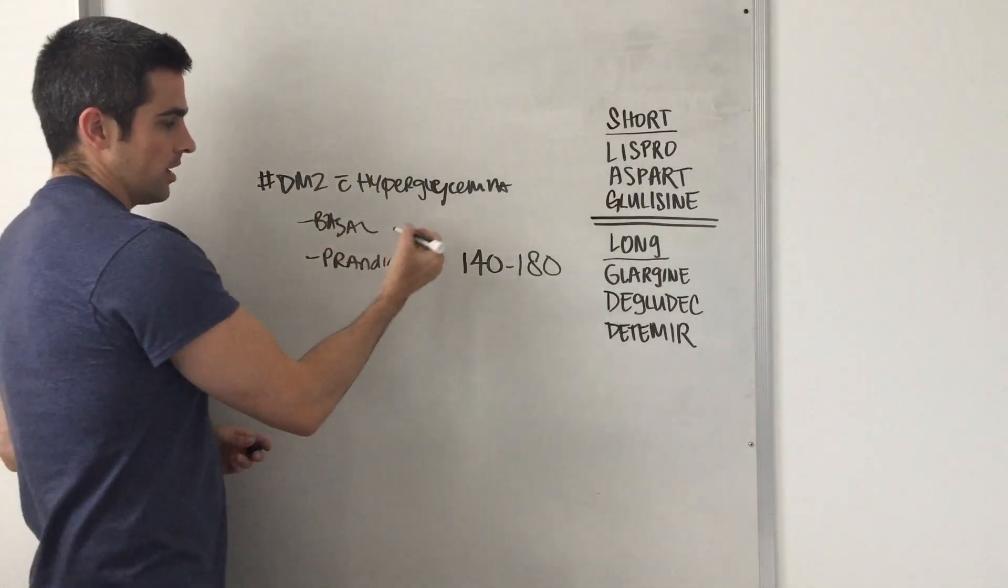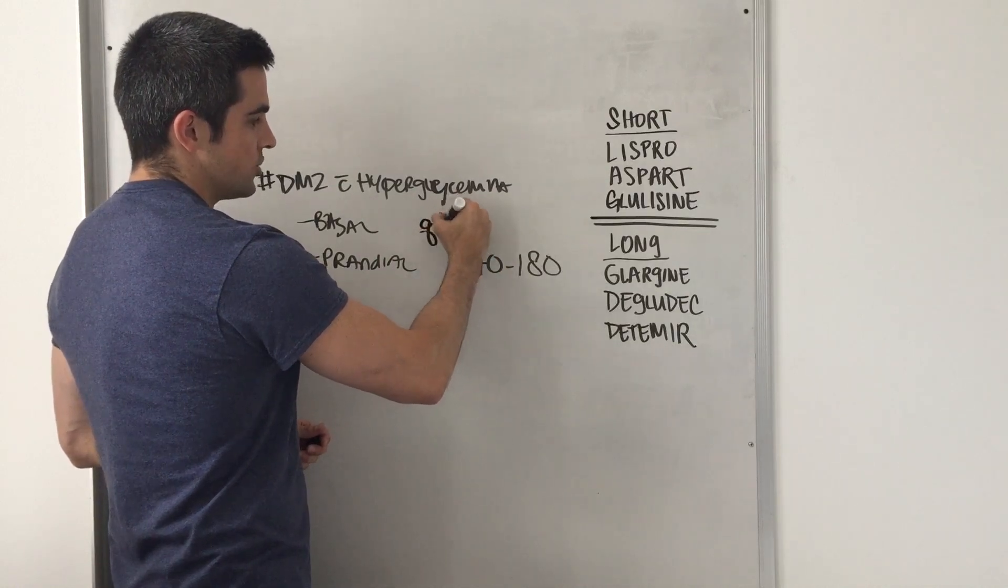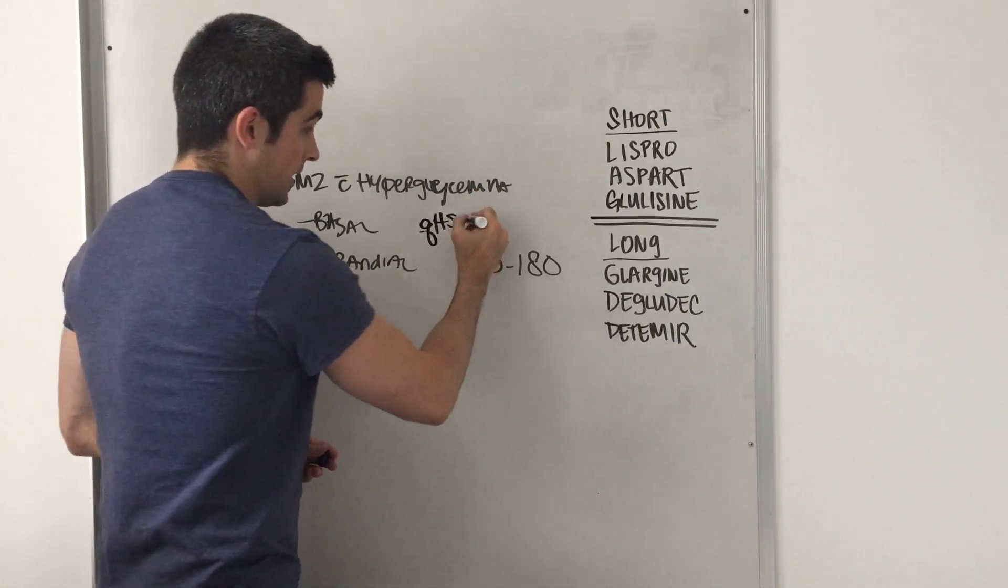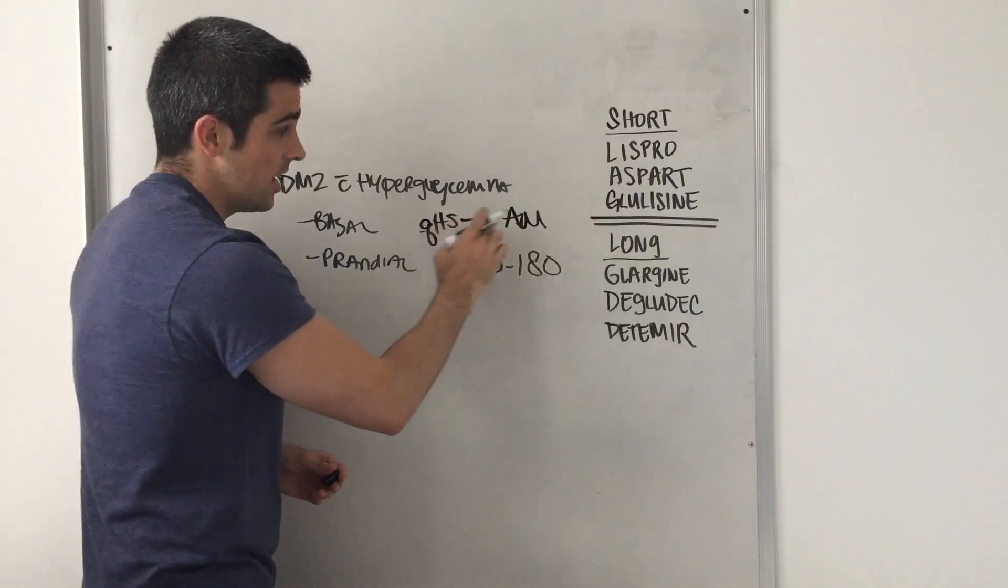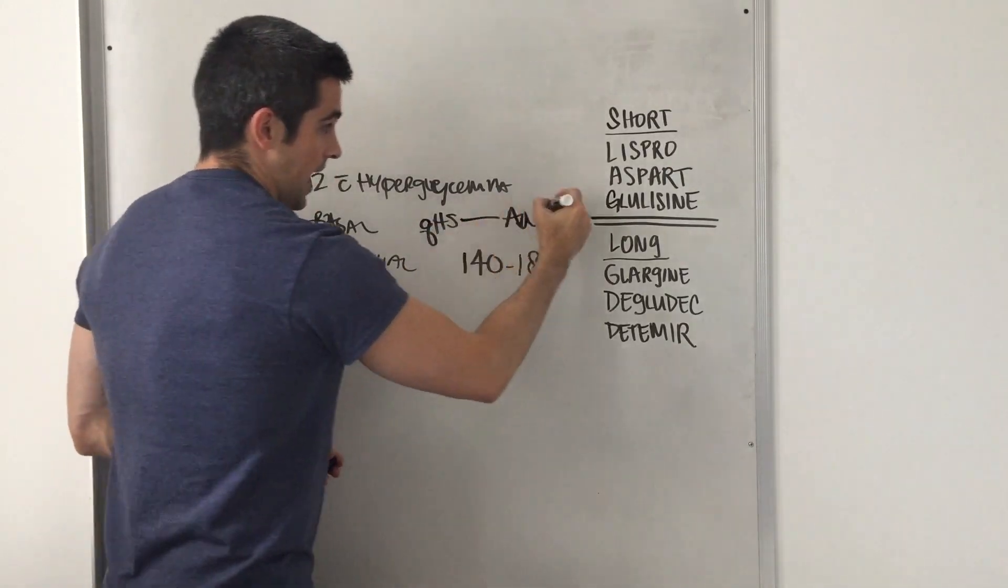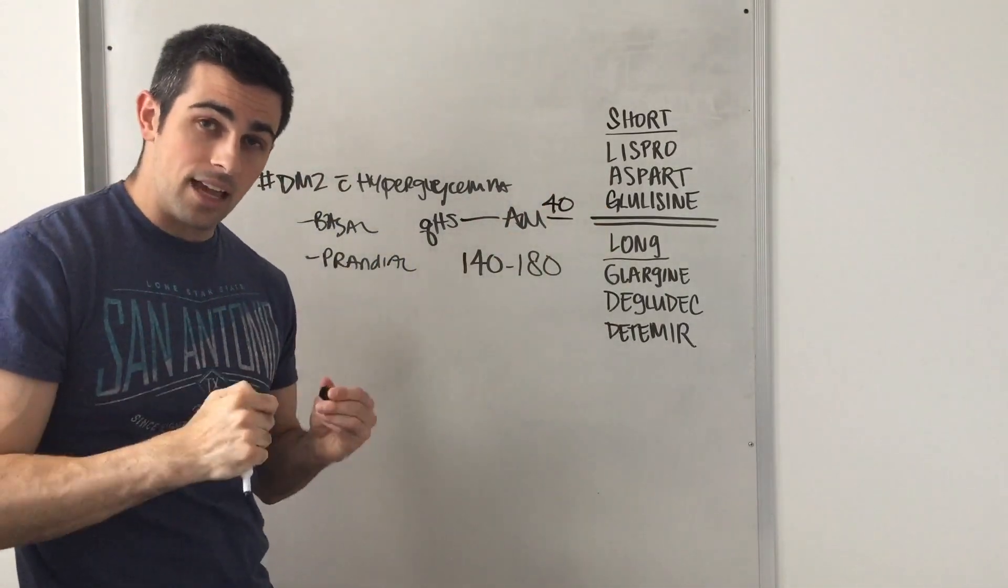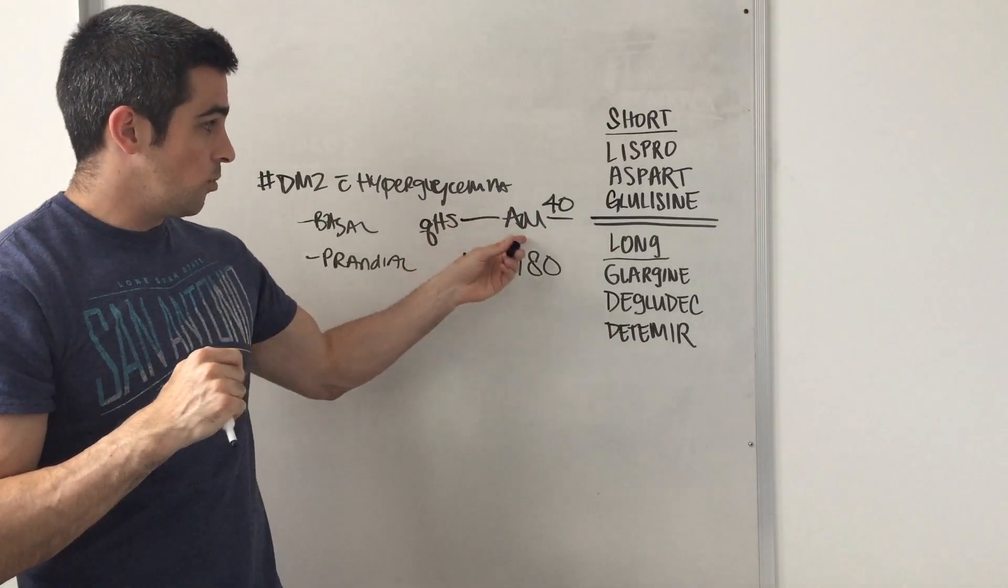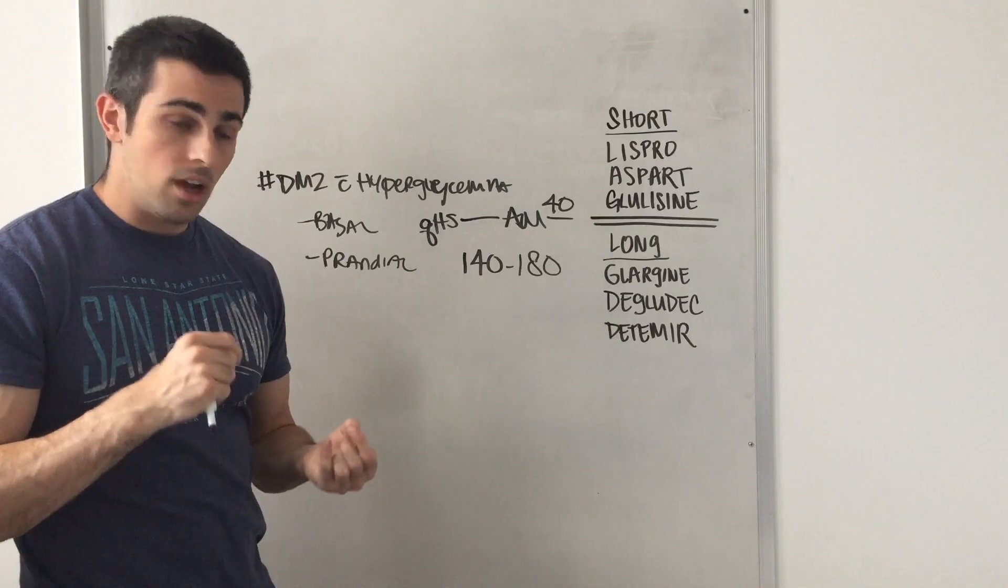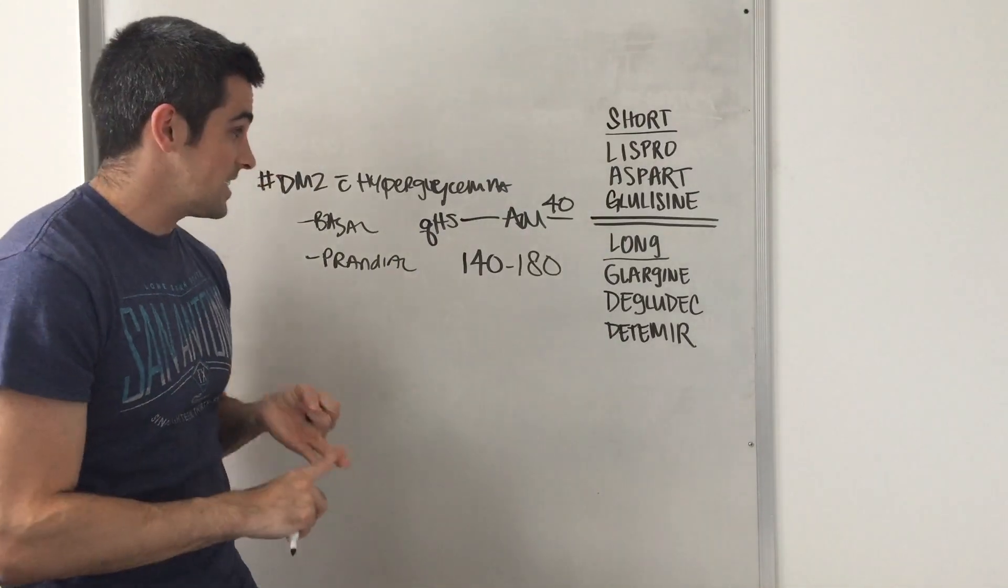And this is important. What I think has been told to me is that you take their QHS insulin and compare it to their AM finger stick. And if it is down by 40 points, then they are adequately being basalized. If they are not down by 40 points from night to the morning, then you have to wonder, are they not adequately basalized or did they eat snacks during nighttime?